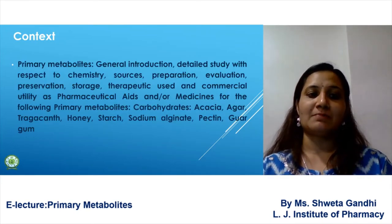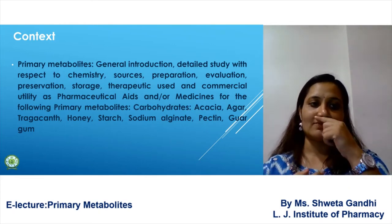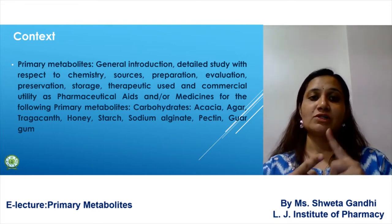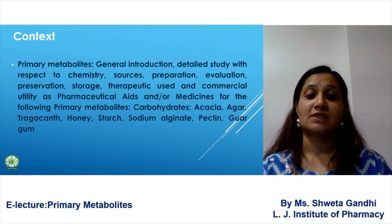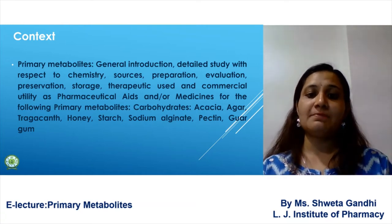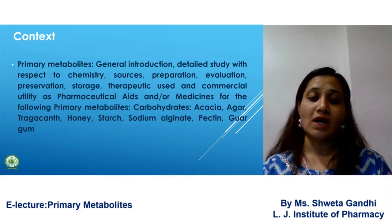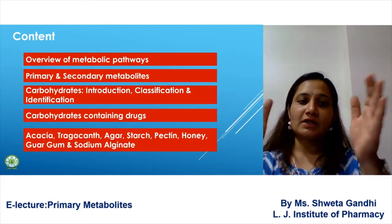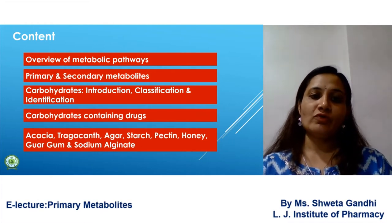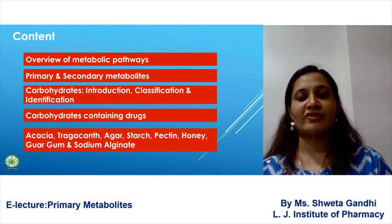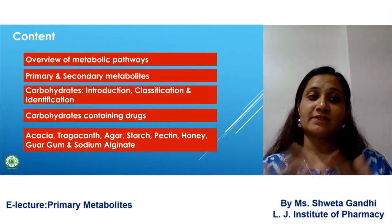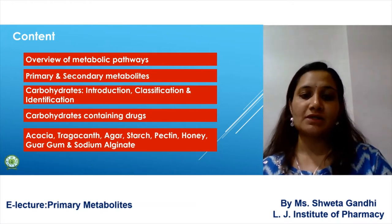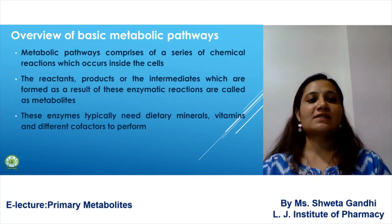In this primary metabolite section we will study the general introduction of every drug. You have to study the chemistry, sources, preparation, chemical constituents, and uses of each drug. The drugs in your syllabus are acacia, agar, tragacanth, guar gum, honey, starch, sodium alginate, and pectin. The content we will cover includes an overview of metabolic pathways, primary metabolites, differences between primary and secondary metabolites, carbohydrates classification, identification tests of carbohydrates, and carbohydrate-containing drugs.